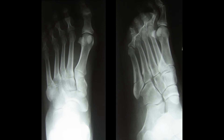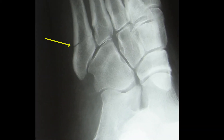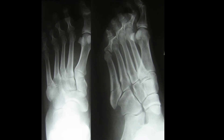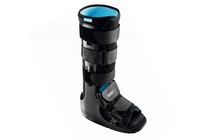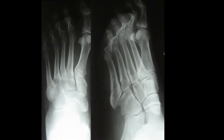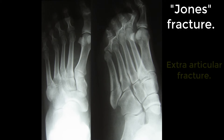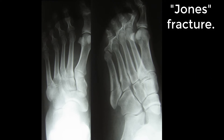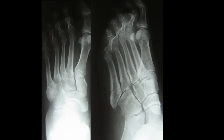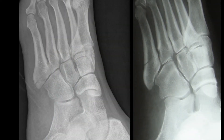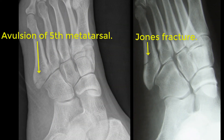The next two X-rays are of a young man who twisted his foot inwards while playing competitive soccer. Seeing the fracture in the metatarsal isn't a problem, but it was treated as an avulsion fracture with a weight-bearing cam boot rather than what should have been done — non-weight-bearing and an orthopedic referral. The reason is it's a Jones fracture, which is an extra-articular fracture particularly prone to non-union, with rates quoted up to 50%. Given that he's very active, he may be considered for operative intervention. Here's a Jones fracture alongside a simple avulsion fracture for comparison.